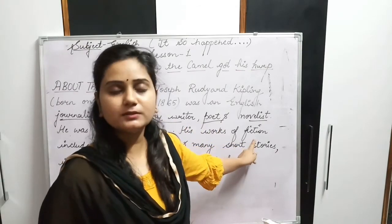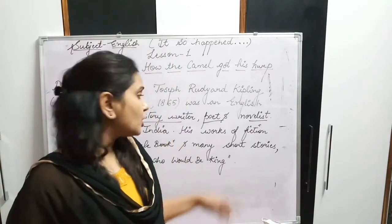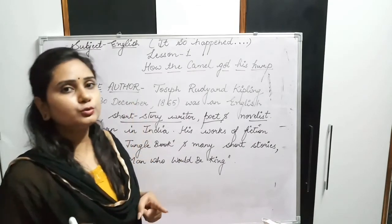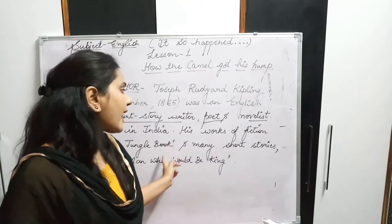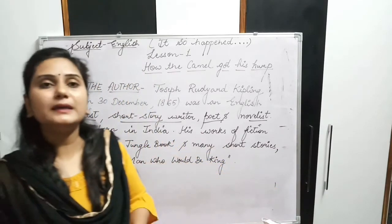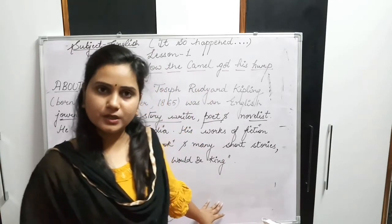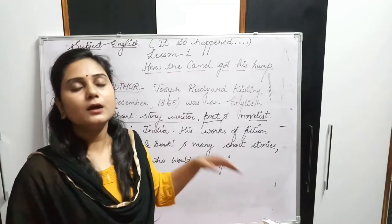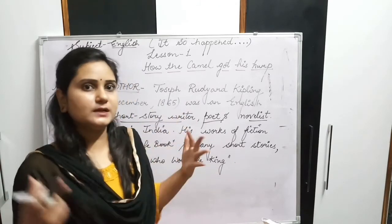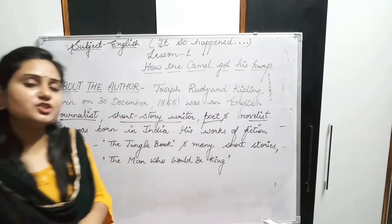Now, what do we mean by fiction? Fiction means stories which are not real. So his works of fiction include the Jungle Book — you all might have gone through that famous book — and many short stories, including 'The Man Who Would Be King.' This is a short introduction of the author Joseph Rudyard Kipling, who was a novelist, poet, short story writer, and English journalist.